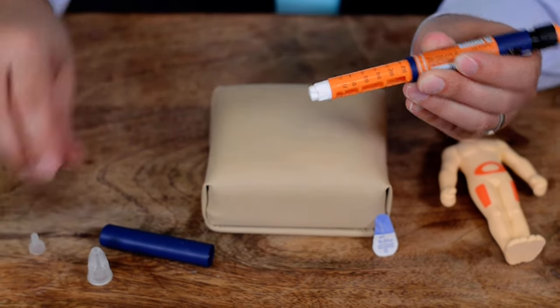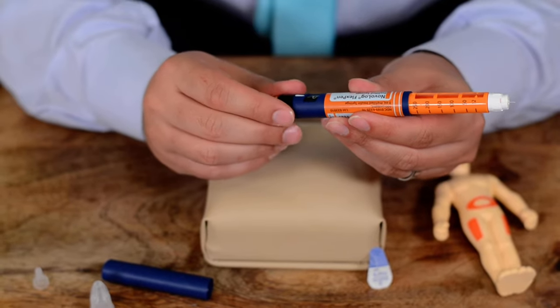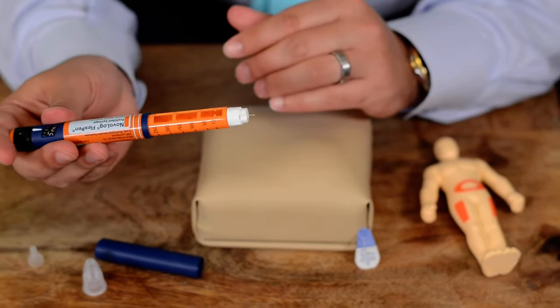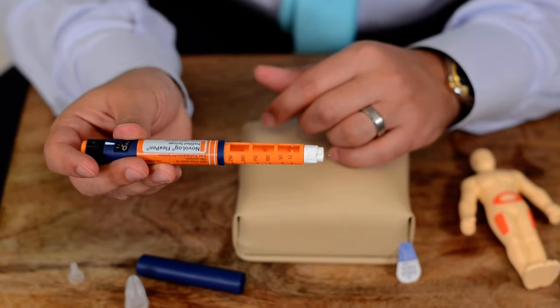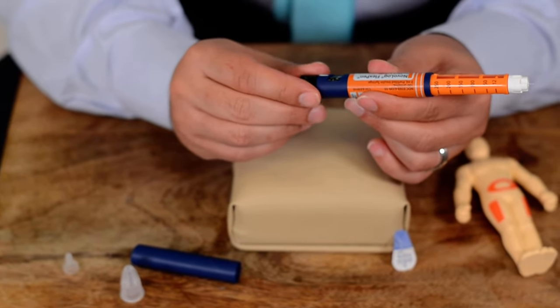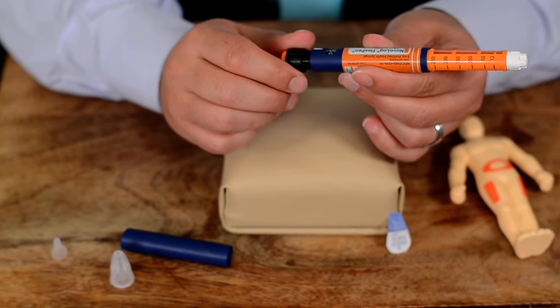Now you are ready. You have to make sure that you do priming with 2 units of insulin. You will see some insulin coming out as you can see, it will drop and after this you are ready and then all you have to do is to dial up.